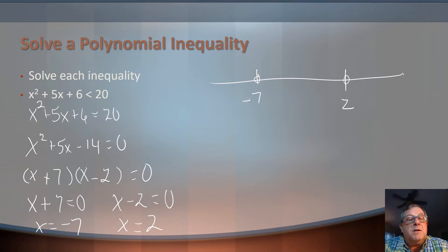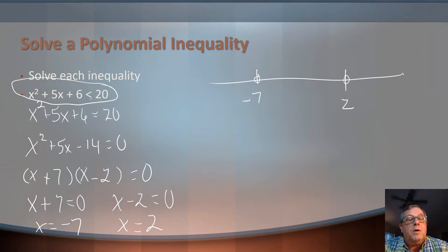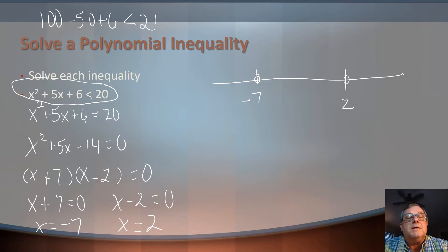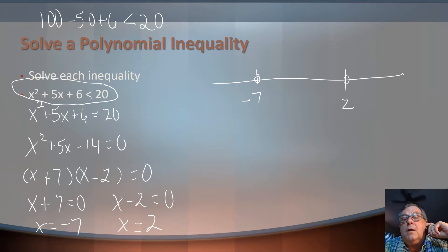I want to pick some easy numbers, so how about negative 10? Going back to my original inequality: (−10)² = 100, and 5 × (−10) = −50, plus 6 gives 56. Is 56 less than 20? No, 56 is not less than 20. So this is not in my solution set — anything from −7 out to negative infinity is not part of my solution.